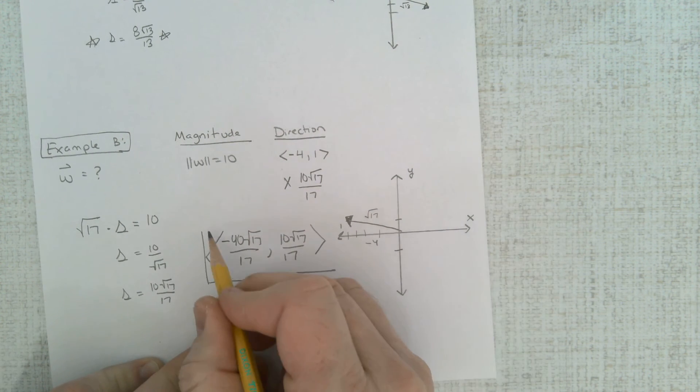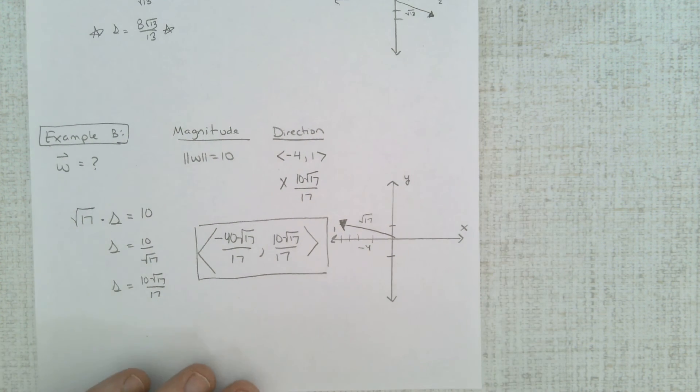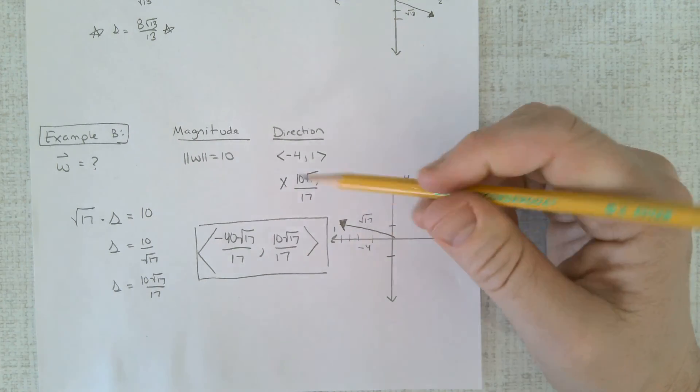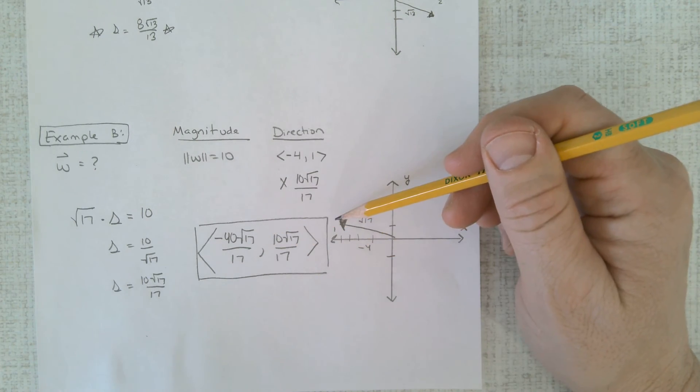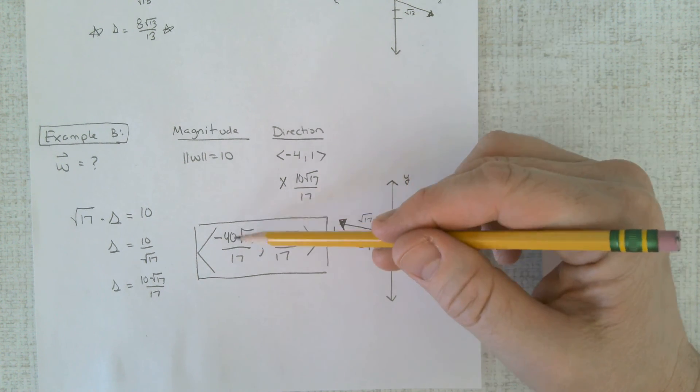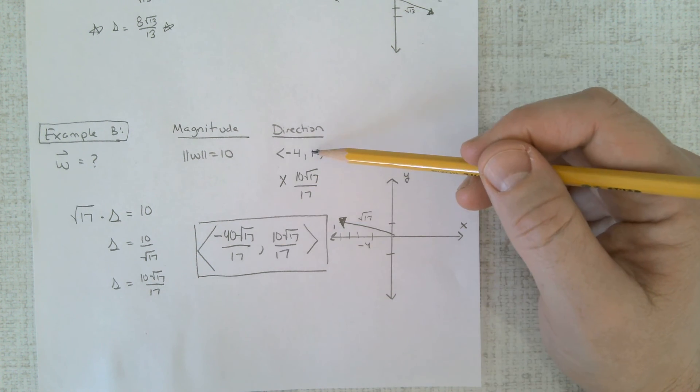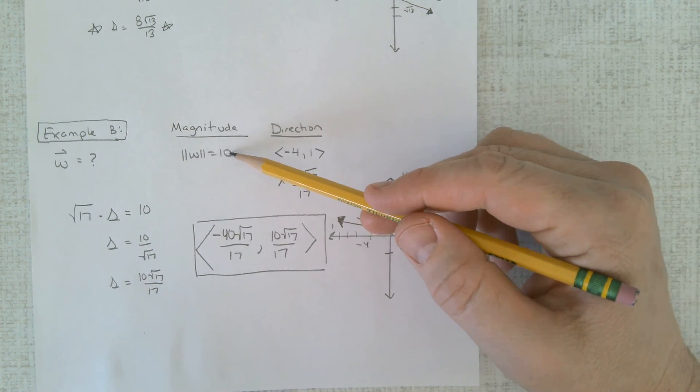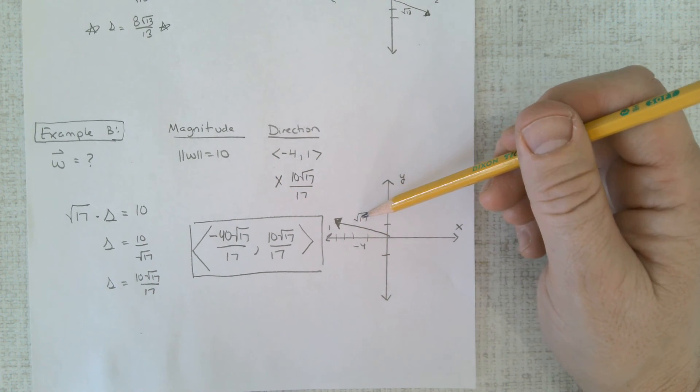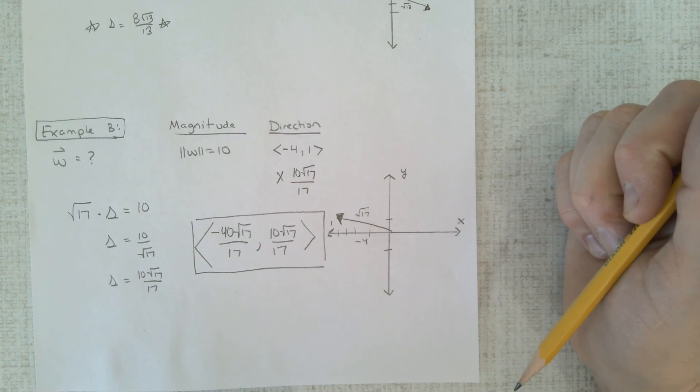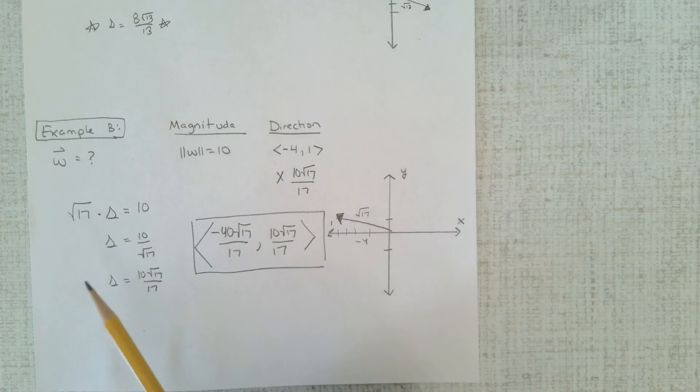And that is my new vector, same direction. It's still going negative then positive, but now if you use these larger numbers, these are larger numbers than up here, you're going to get this larger magnitude. Instead of being just root 17, it's going to be all the way up to 10. Now one thing you want to be careful of: